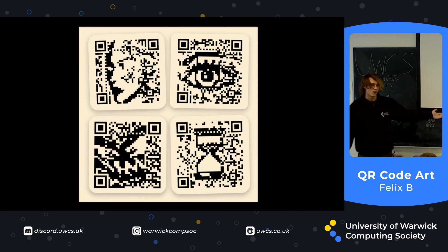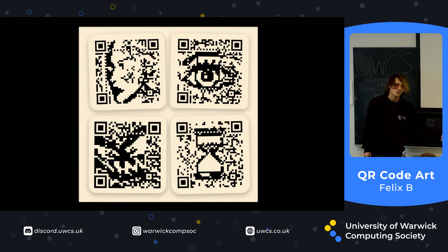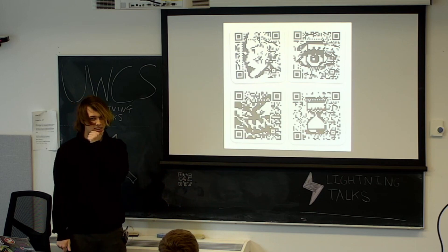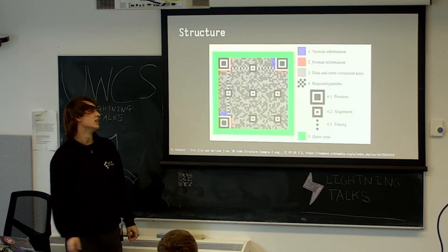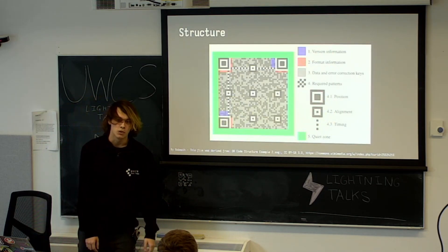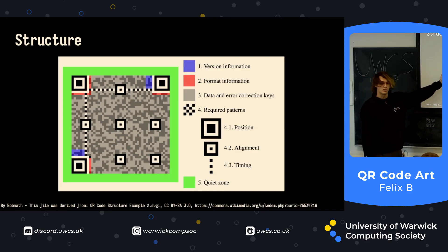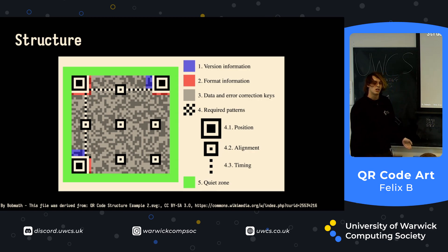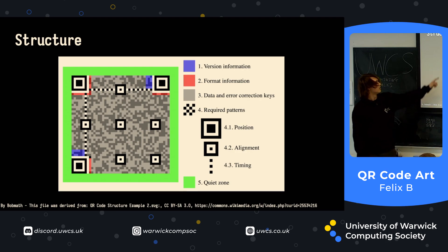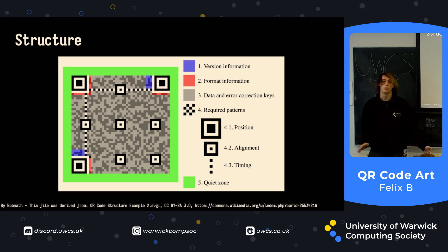This is a particularly cool QR code, or set of QR codes, that I saw quite a while ago, and I thought: how do we make this? But first, let's talk about the structure of a QR code in general. There are lots of different alignment marks, which are used when you scan a QR code to determine where each bit of it is. There's information about the format and version of the QR code, because there's lots of different versions. And then the rest is just data that you can fill in with whatever you want.